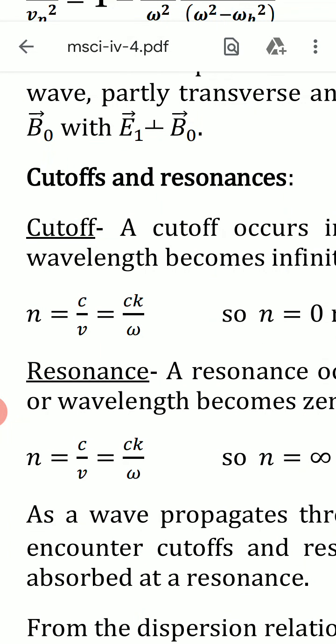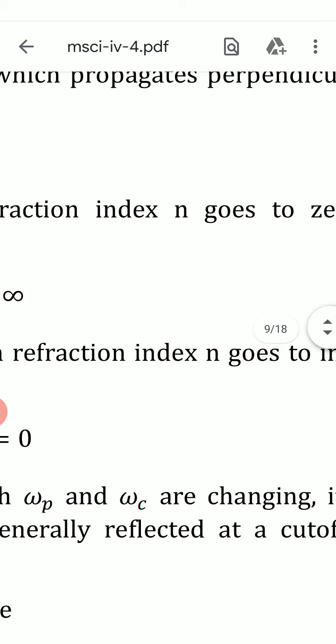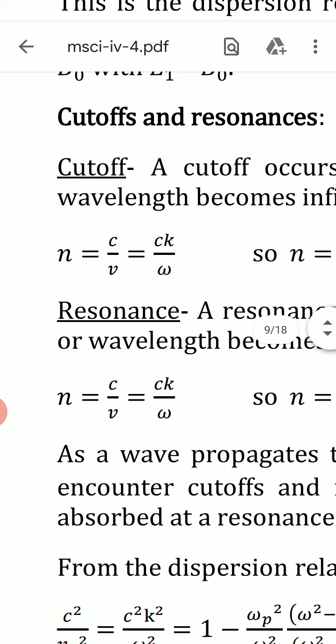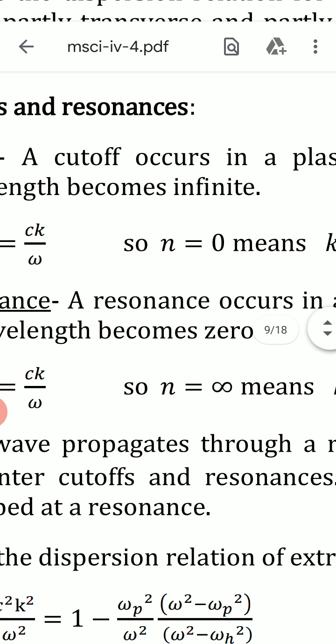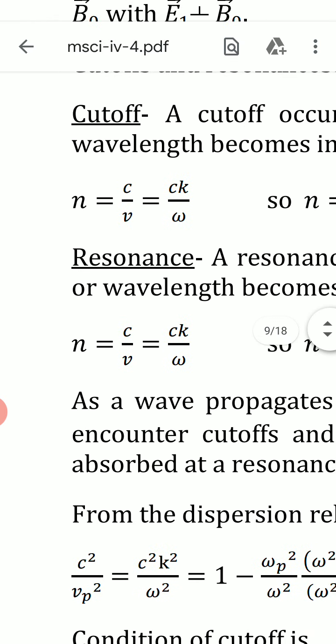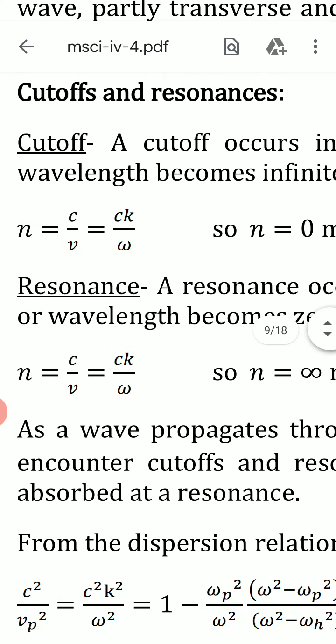Now we define cutoff and resonance. A cutoff occurs in a plasma when the refractive index n goes to 0, or equivalently when the wavelength becomes infinite. The refractive index is defined as n = c/v, where c is the speed of light in vacuum and v is the speed of light in the plasma.